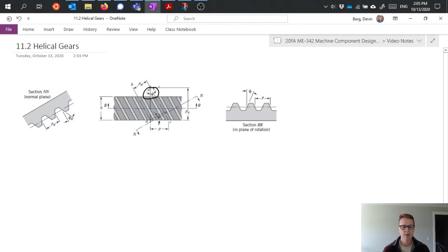You could think of a spur gear as effectively a helical gear with a helix angle of zero degrees, and basically everything we're doing here would still apply. Because of this helix angle, we have to modify some of our variables that we've talked about before with spur gears.